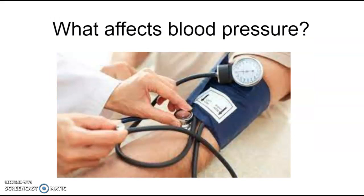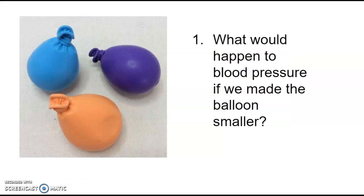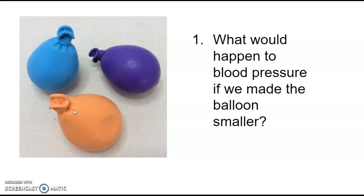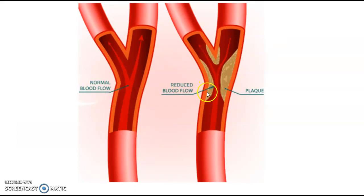So what affects blood pressure? Imagine a balloon like your arteries — if you made the balloon smaller but kept the same amount of stuff inside, the pressure would increase. The same thing happens with your arteries: if your arteries are smaller, there's higher pressure. Arteries can get smaller because of plaque that builds up, caused by artery damage from high blood pressure or by diet and cholesterol intake. This plaque causes the arteries to narrow, and when they narrow there's higher pressure because it's trying to fit the same amount of blood in a smaller space.